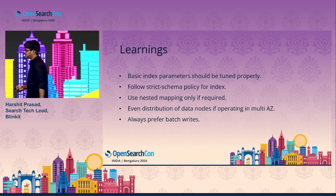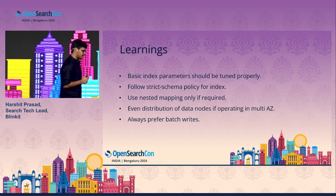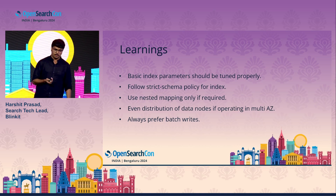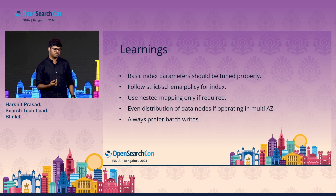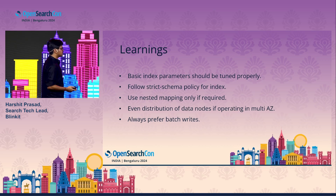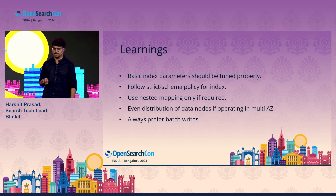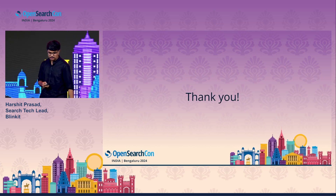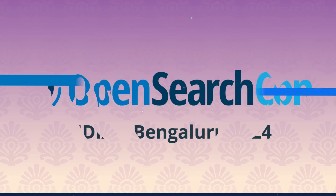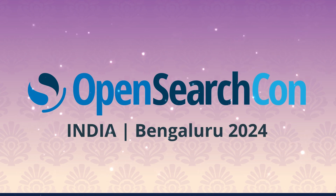To conclude, the learnings I'd like to share: it's very important to have knowledge of basic index parameters and they should be tuned properly — they look easy to understand but play a very important role in how you operate your cluster for your use case. Always follow a strict schema policy for the index and be careful about which field is used for what purpose. Use nested mapping only if it's required. Ensure even distribution of data nodes if operating a cluster in multi-AZ mode. And always prefer writes in batches. That's pretty much from my side — thank you.